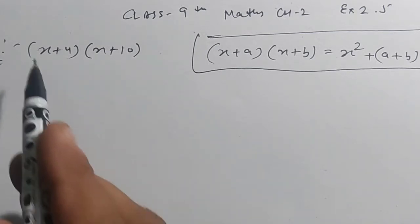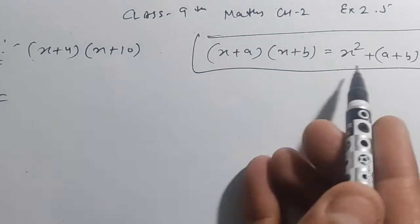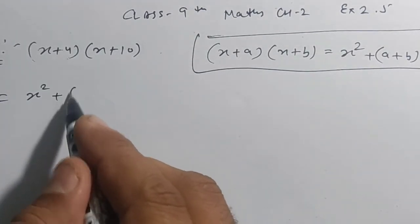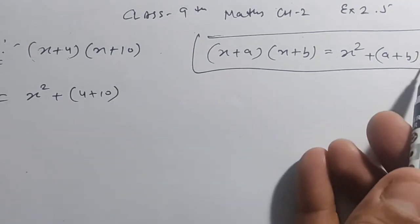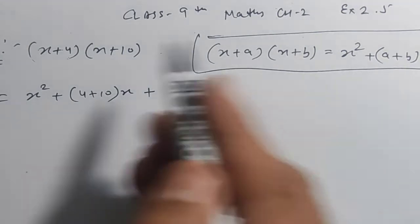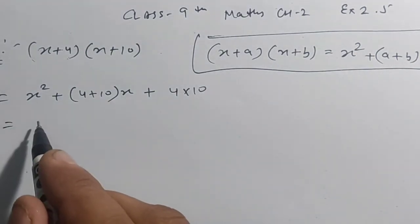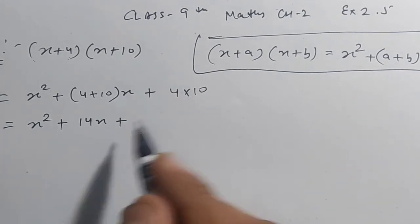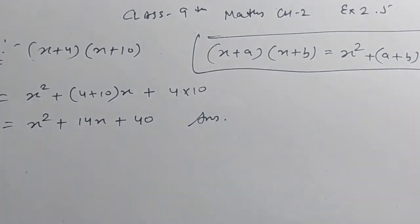यहाँ देखो, x की जगह x है, a की जगह 4 और b की जगह 10 है। तो यह हो जाएगा: x² + (4 + 10)x + (4 × 10) = x² + 14x + 40. यह आपका answer है।